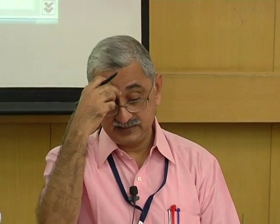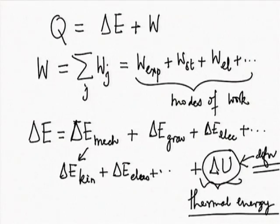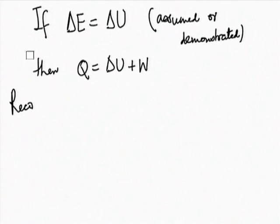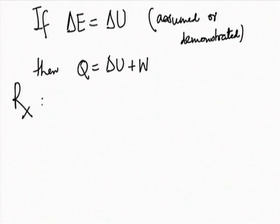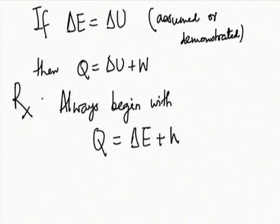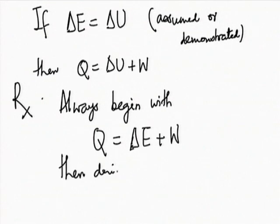The recommendation is: always begin with Q = ΔE + W, then make appropriate assumptions — including the assumption that ΔE = ΔU if needed — and then derive the application.